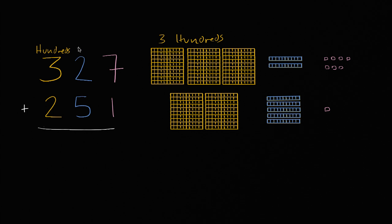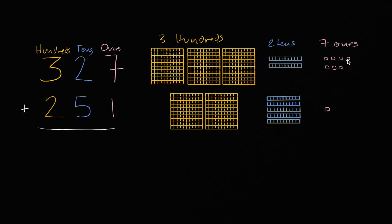And then I have two tens. The two is in the tens place, so these are the two tens right over here. And then I have seven ones — the seven is in the ones place. You see the seven ones right over there. So this is three hundreds, two tens, and seven ones, or 327.